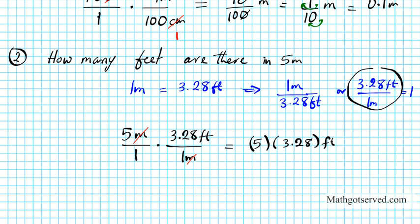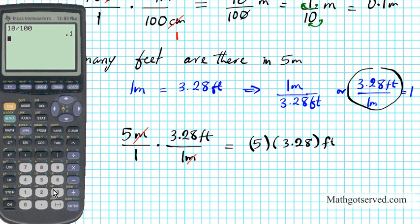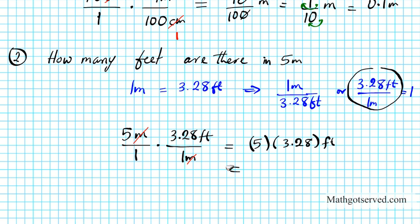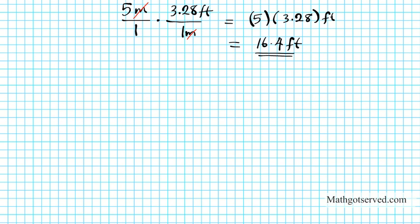Let's compute that using a calculator. 5 times 3.28 feet is 16.4 feet. So our answer is 16.4 feet — 5 meters is the same thing as 16.4 feet. Let's run another example.